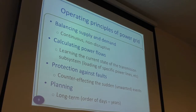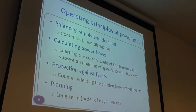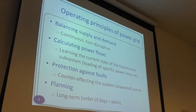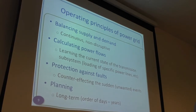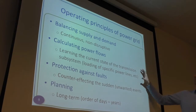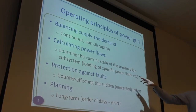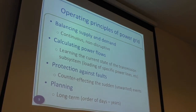In the power grid you want to balance the supply and demand so that power generation continuously follows what consumers use, without disruption. Another goal is to learn the current state of the transmission subsystem — the loading of specific power lines — because this is very valuable to know if you need to connect consumers differently to avoid overloading lines, which can lead to outages. You also want to counter sudden events like storms taking down a power line, and have long-term planning for grid expansion.